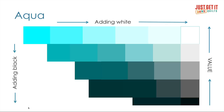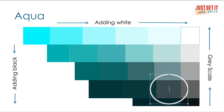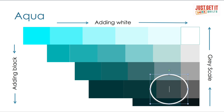With hue, saturation, and value, we can describe almost any color. So if we wanted to describe the color in the white circle, we could call it a desaturated aqua with a low value.